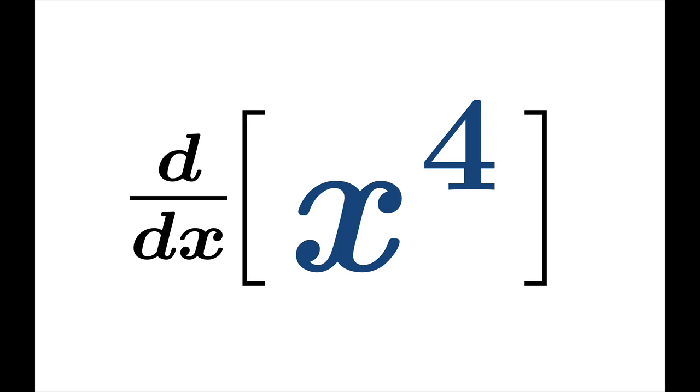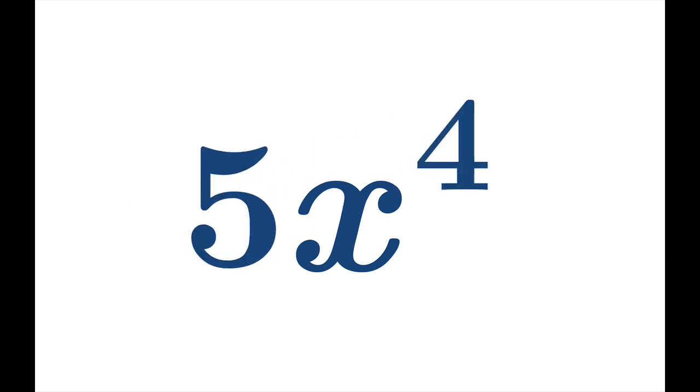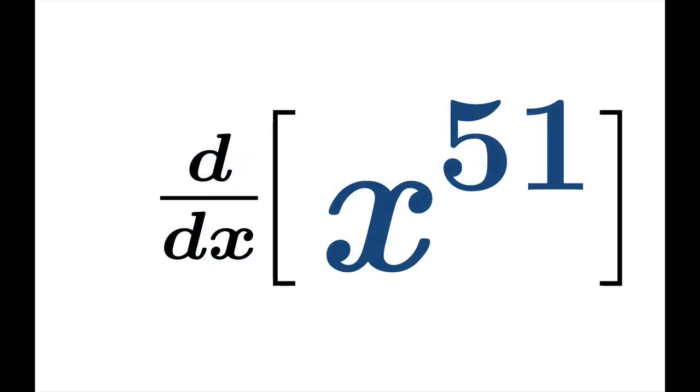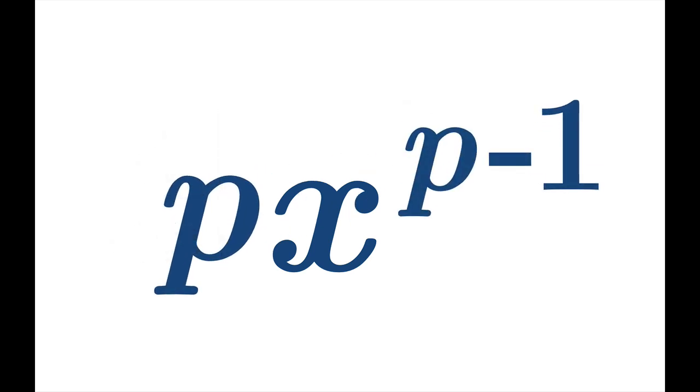So let's test drive this power rule. What's the derivative of x to the 4th? 4x cubed. x to the 5th? Just like we saw, 5x to the 4th. x to the 51? No problem. 51x to the 50. And more generally, the derivative of x to the p. If we don't know what p is, that's okay. We can still apply the power rule. The derivative should be px to the p minus 1.